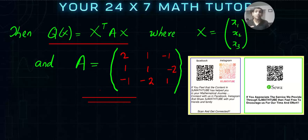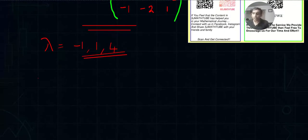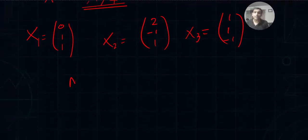This is an assignment for you — try it before your exam and check whether you get eigenvalues −1, 1, and 4. I calculated the eigenvectors: x1 = [0, 1, 1]^T, x2 = [2, −1, 1]^T, x3 = [1, 1, −1]^T. The modal matrix M is formed from these eigenvectors: M = [[0, 2, 1], [1, −1, 1], [1, 1, −1]].